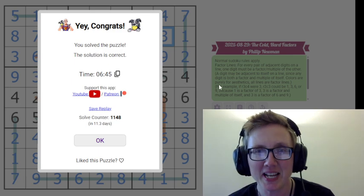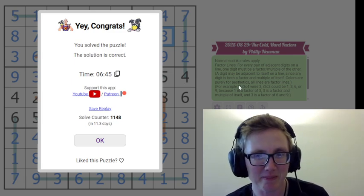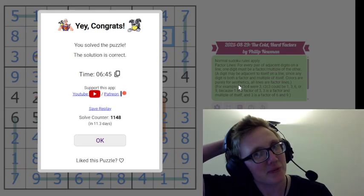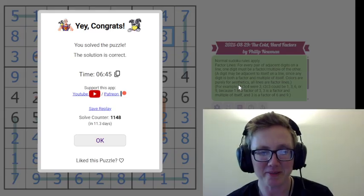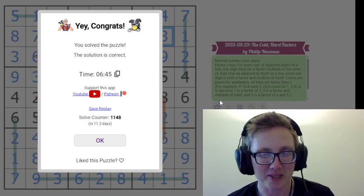And that is how you solve Philip Newman's The Cold Hard Factors. I hope you guys enjoyed that one. That was a bit of a tricky one for me, but I'm glad I stuck with it and ended up figuring out a pretty smooth path to it at the end, because it really was very elegant once I worked out what was happening. If you want to solve it yourself, the link is in the description of this video. I will see you again soon.